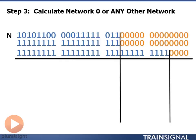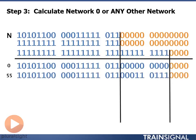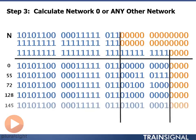Next, we start calculating networks. We calculate network number 0. After network 0, we calculate network number 55 as the next requirement. We're converting 55 to binary, putting it into our borrowed bits area. We need network number 72, then network number 128. Last, we need network number 145.